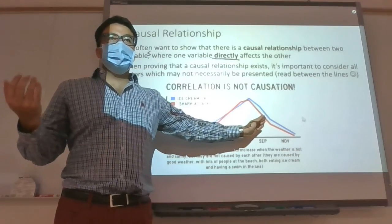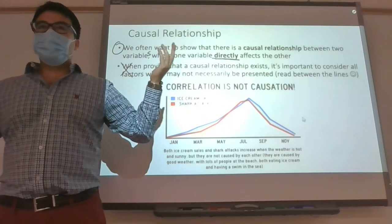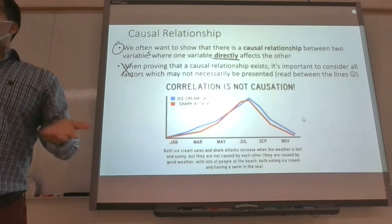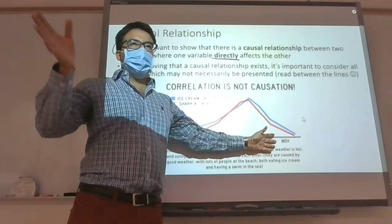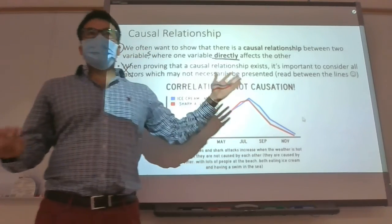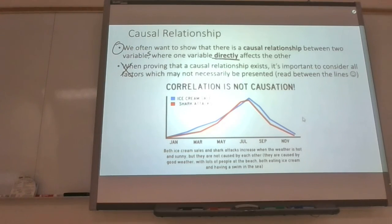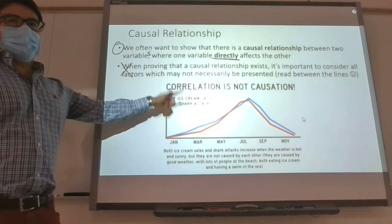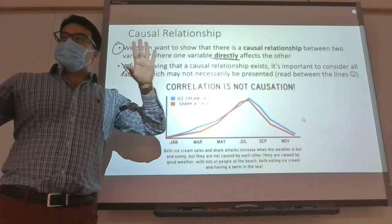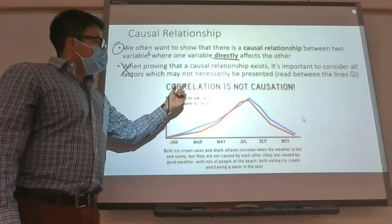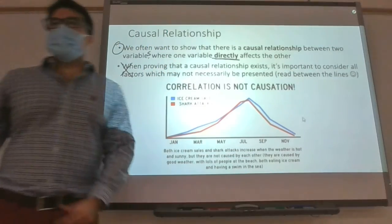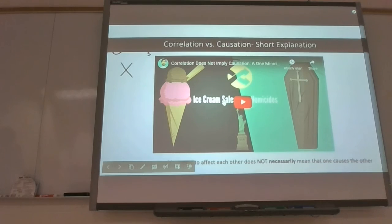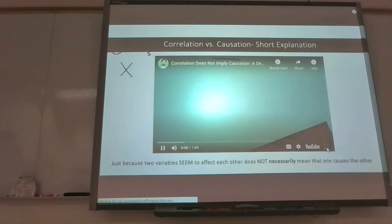Most people who've been attacked by sharks were probably doing something summer-like right before, but that summer activity didn't cause the attack — it's just that the chances of going to the beach in winter with a shark around are very low. Ice cream sales and shark attacks simply happen around the same season. That doesn't mean ice cream affects shark attacks or vice versa — they don't directly cause each other, they just happen around the same time. That's what correlation means — it's not the same as causation.